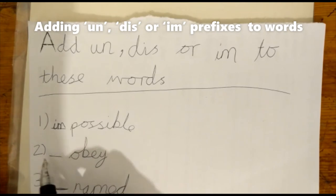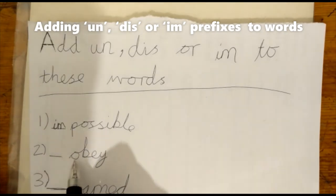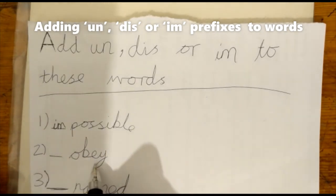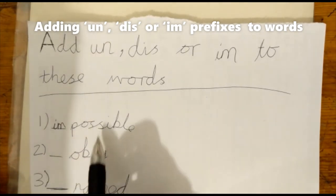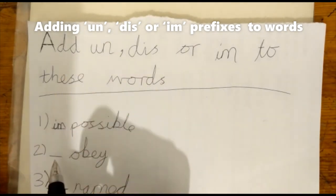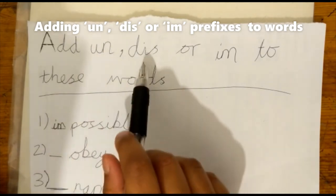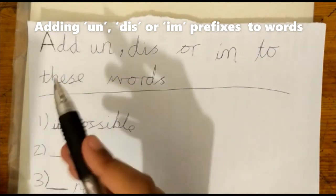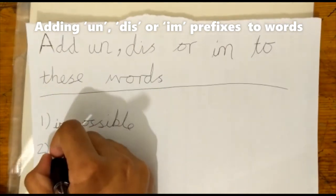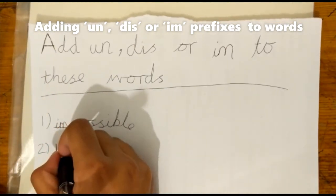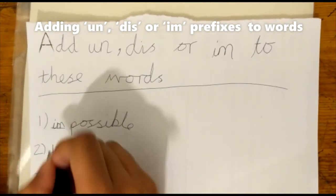Number two, we have something obey. We try un-obey, it does not work. And if we try dis-obey, it works. So dis is the prefix that we're looking for.